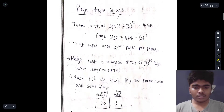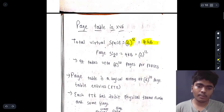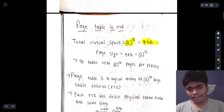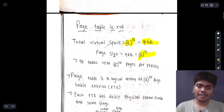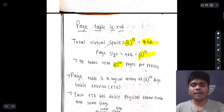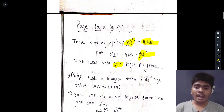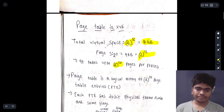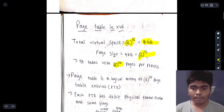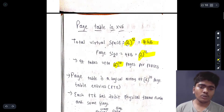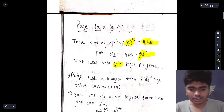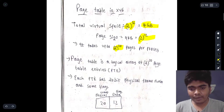Looking at the page table in xv6: the total virtual space is 4 GB, that is 2 to the power of 32, and the page size is equal to 4 KB, which is 2 to the power of 12. Basically, it takes up to 2 to the power of 20 pages per process. 4 KB is smaller than 2 to the power of 32 bits, so it takes up to 2 to the power of 20 pages at maximum per process. The page table is a logical array of 2 to the power of 20 page table entries.